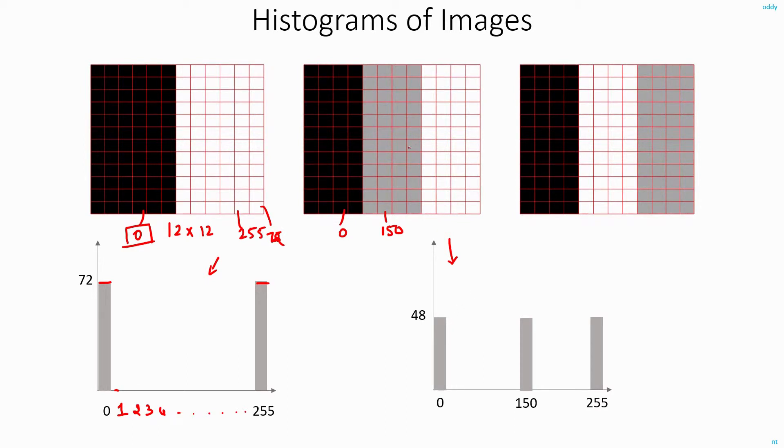Now what happens to the histogram if I swap these two areas? It doesn't matter, the histogram will still be the same. Why? As long as the number of pixels with these intensity values are same, it doesn't matter how the image looks, the histogram will still look the same.